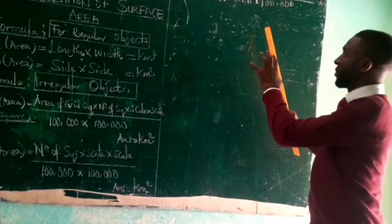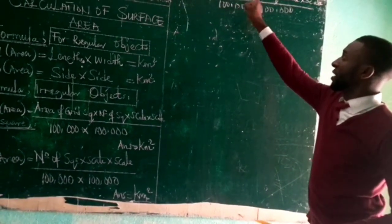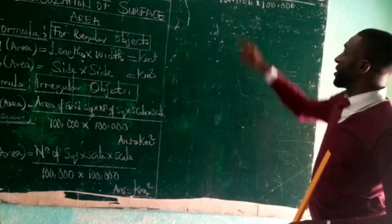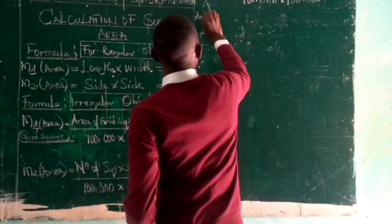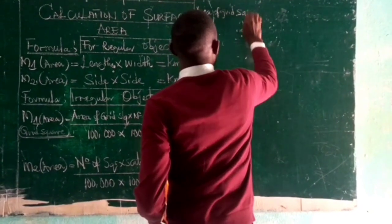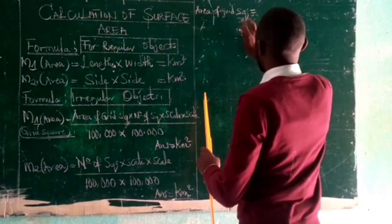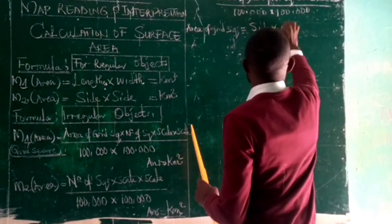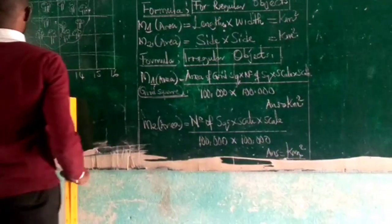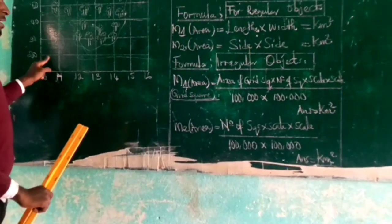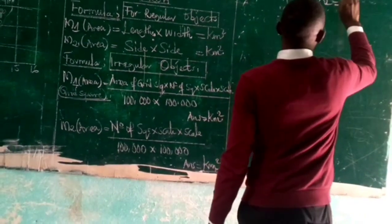From the formula, we can determine the next things to look for. The first is the area of the grid square. Area of grid square equals side times side — just like a square. We measure the side of the grid square on the map, and let's say it is 2 cm by 2 cm. Then we apply it: 2 times 2 gives us 4 cm². So the area of the grid square is 4 cm².